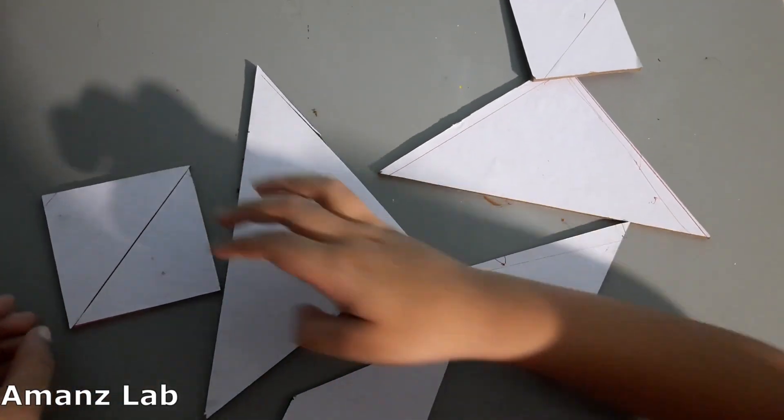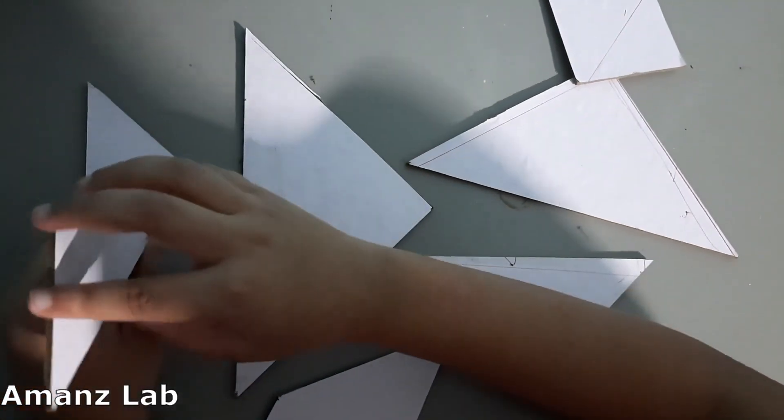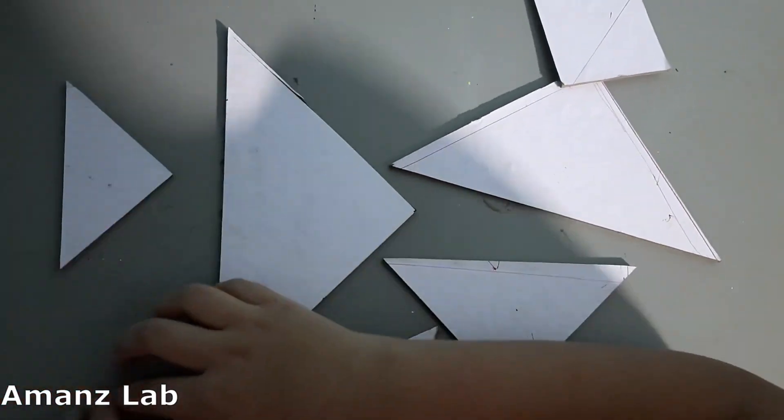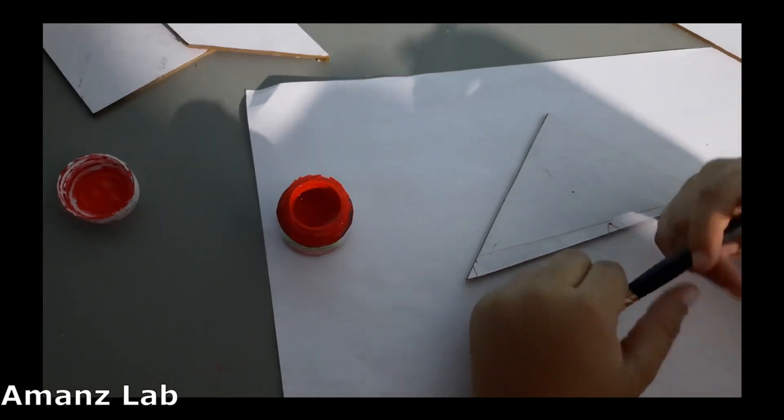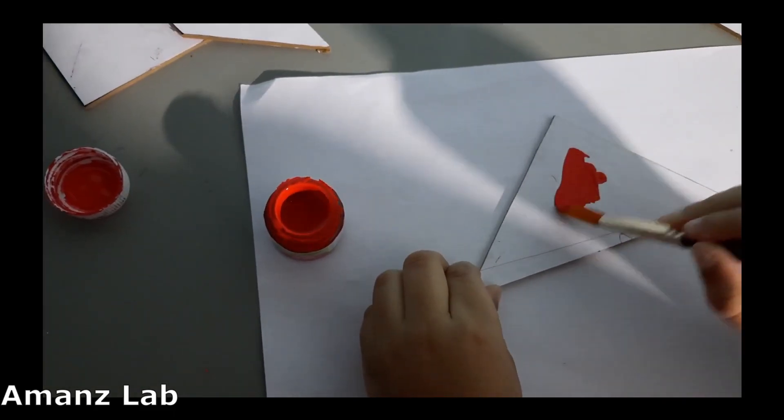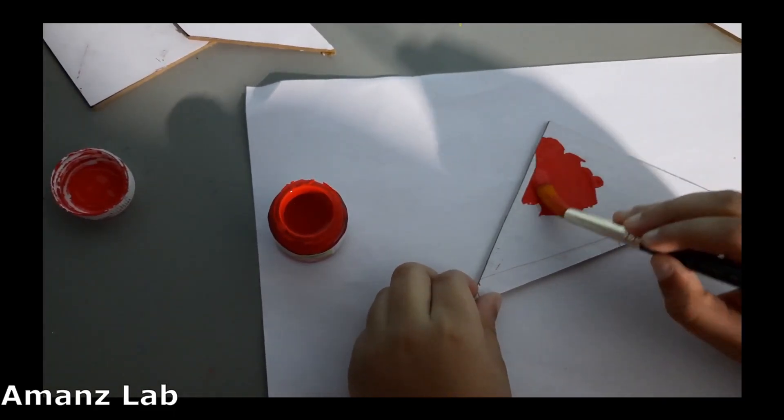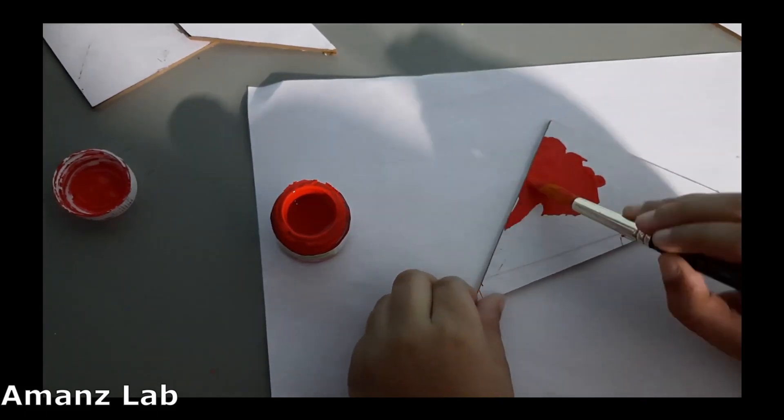I have cut these seven pieces. Now let us paint on both sides with the same color. First paint on one side, after it dries let us do the next side.